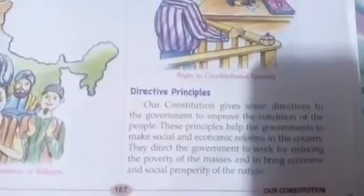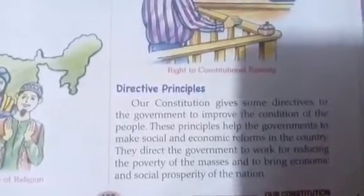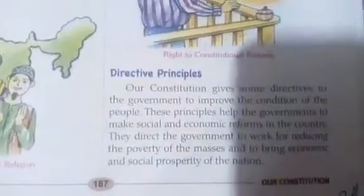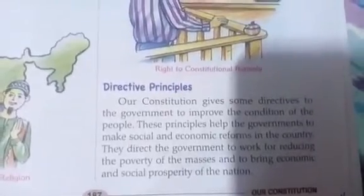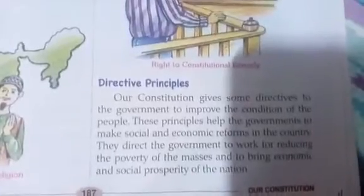Directive principles are a unique feature of our Constitution. While fundamental rights are for individuals, directive principles are totally directed toward the government in action. Our Constitution gives some direction to the government to improve the conditions of the people. These principles help the government to make social and economic reforms in the country, directing the government to work for reducing poverty and bringing economic and social prosperity to the nation.